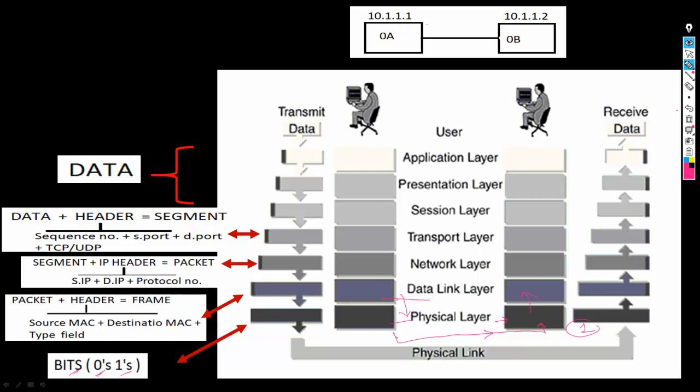The LAN card will convert these bits into frames and frames will be sent to layer 2 to the ARP protocol. The ARP protocol will remove the header and check the destination MAC address, which is 0B. It will verify that its own MAC address is 0B, accept the data, and send the remaining packet information to the network layer. This is done on the basis of the type field, which indicates IPv4.